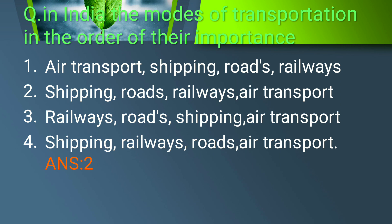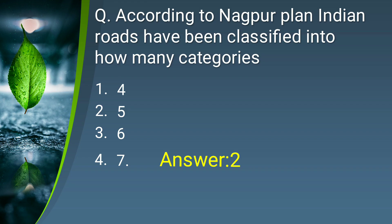The next question: what are India's modes of transportation in order of their importance? The options include various arrangements of airways, railways, waterways, and roads. The answer is shipping, roads, railways, and air transport — this is the order of importance India has adopted for its modes of transportation.